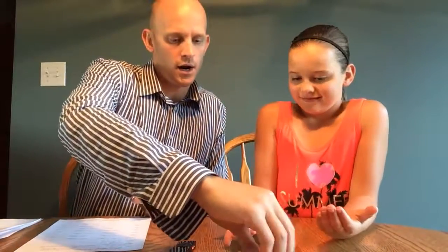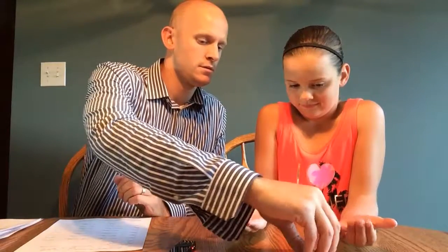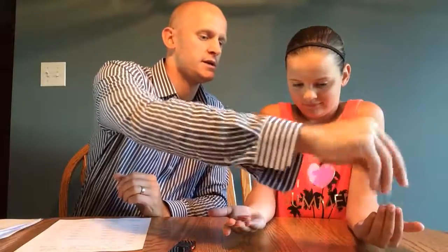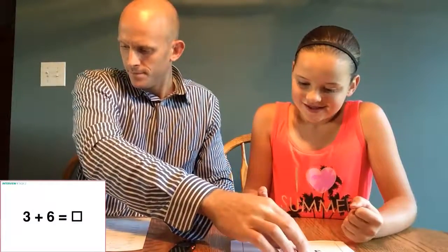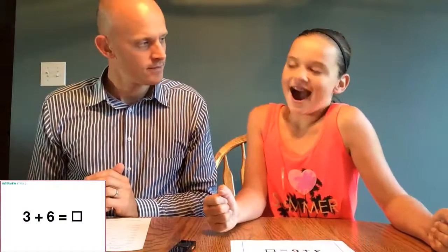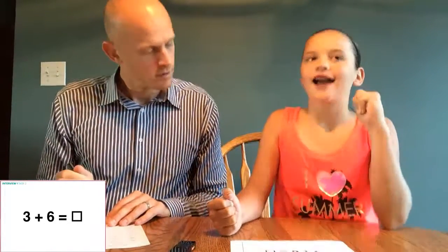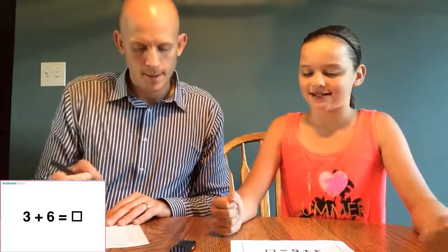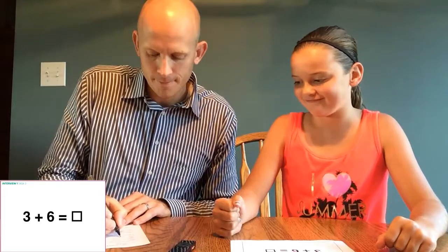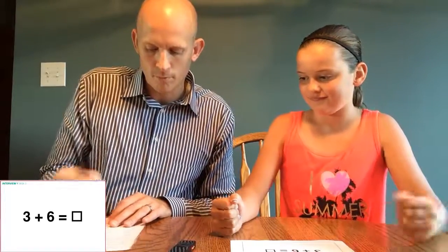Alright. Hold out your hands for me. Here are three counters. Six counters. Close them for me. How many counters do you have all together? Nine. And tell me your thinking about how you come up with nine. I counted by threes. Three, six, nine. Okay. Thank you. Thank you. Open that.